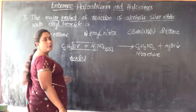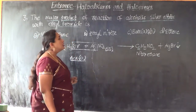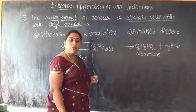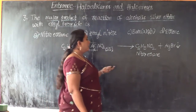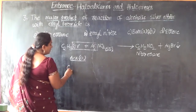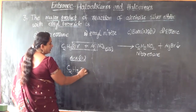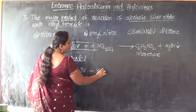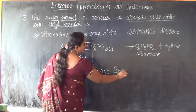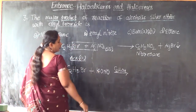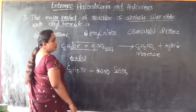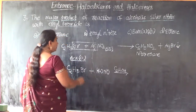Here is another important point of focus I want you to remember, dear students. Because the question has alcoholic silver nitrite, the major product obtained is nitroethane. If instead it is alcoholic potassium nitrite — say ethyl bromide is treated with ethanolic potassium nitrite — the O–N–O bond structure will be present. This is potassium nitrite in ethanol, an alcoholic compound.